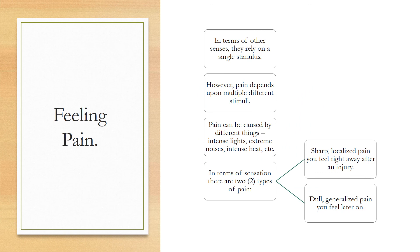In terms of pain compared to other senses: other senses rely on a single stimulus — for example, a bright light or a loud noise. However, pain depends on multiple different types of stimuli, such as intense lights, extreme noises, or intense heat or cold. There are two types of pain: sharp, localized pain felt right away after an injury such as cutting your finger, and dull, generalized pain felt later — like when you twist your ankle playing soccer and the pain and swelling develop hours later.